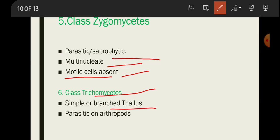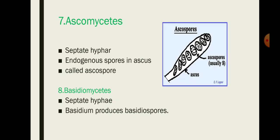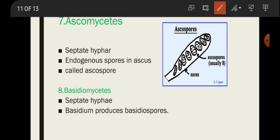The sixth subclass is Trichomycetes. They have either a simple or branched thallus and are parasitic in arthropods such as mosquitoes, house flies, and spiders. They are parasitic on insects, absorbing nutrients from them. The next important subclass is Ascomycetes.